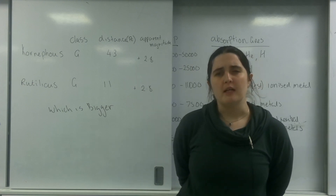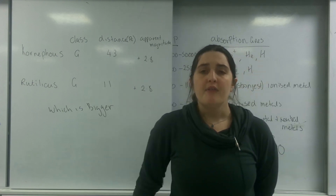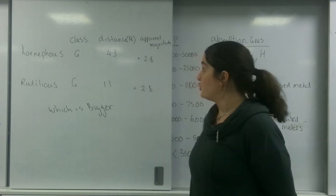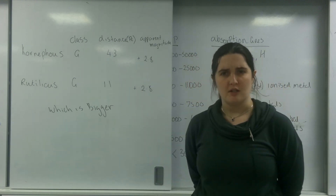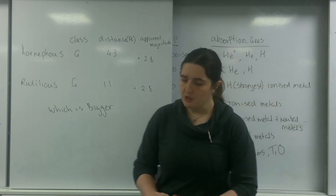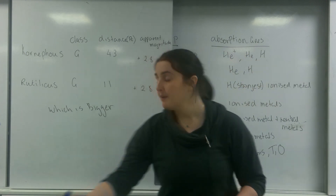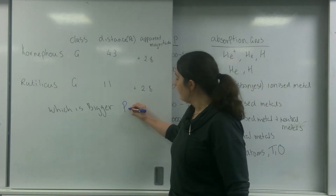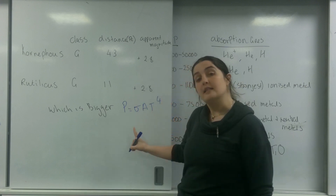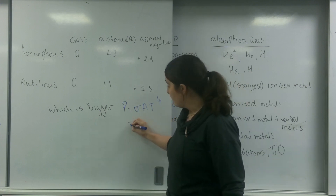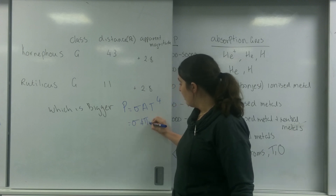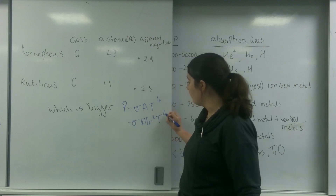There's only one formula that you know that relates the size of the star to any of the information to do with apparent magnitude or class. And that is Stefan's law, which — just a reminder — is power equals sigma A T to the 4. This is the surface area, so sigma 4 pi r squared T to the 4.